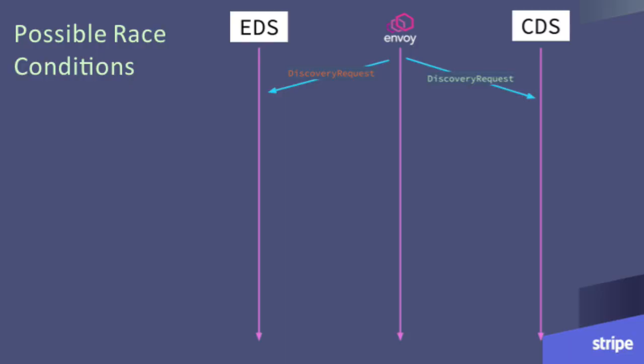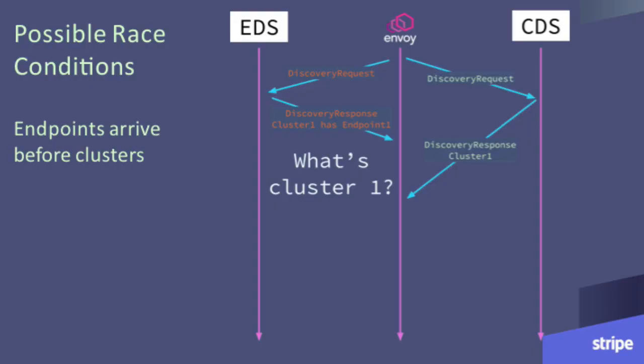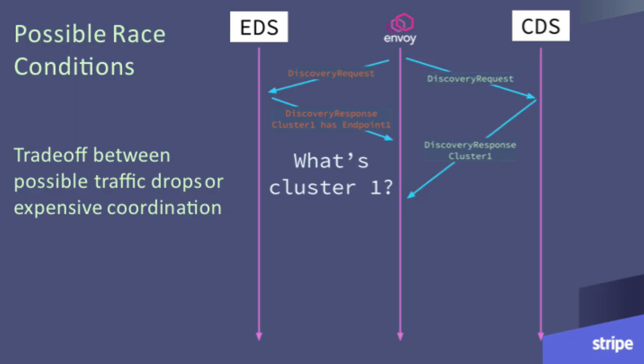The XDS modularity can also lead to some race conditions if you run the discovery services across different processes or across different hosts in a distributed fashion. Let's say on the left-hand side we have an Endpoint Discovery Service and on the right-hand side we have a Cluster Discovery Service. Recall that an endpoint is a specific host and a cluster is a logical grouping of them. Envoy boots up and makes discovery requests to the EDS and CDS simultaneously, but the EDS responds first, letting Envoy know that some cluster maps to a given endpoint. Envoy says, what's cluster one? — it hasn't been told about that from the CDS yet, and it will drop traffic or have undefined behavior during that period. At Stripe, we accept this trade-off and rely on Envoy retry logic as well as application-level retry logic. But if you're in an environment where you care about very precise traffic routing, this is potentially a problem. One workaround is coordinating between management servers by storing state in a database, Redis, or some backing store, though that can be fairly expensive.